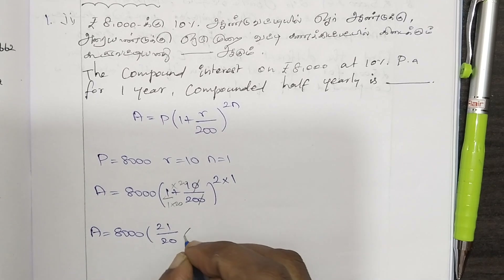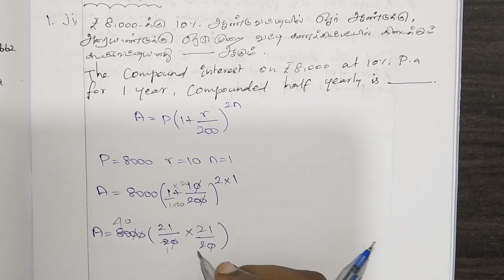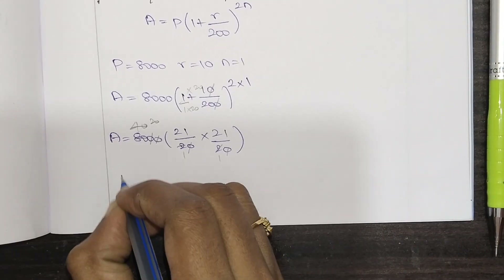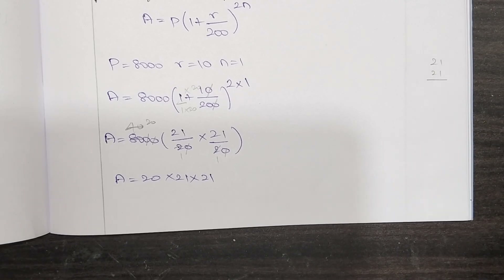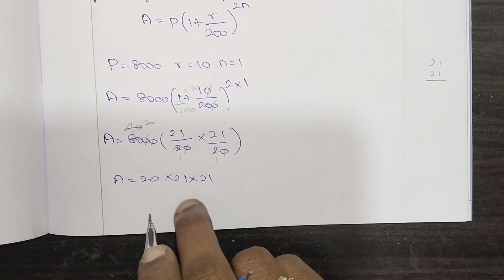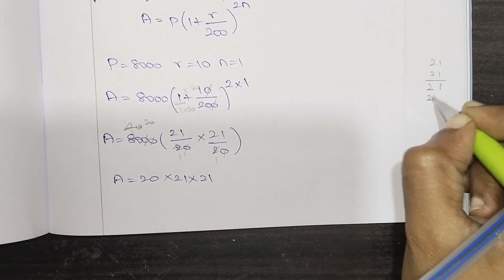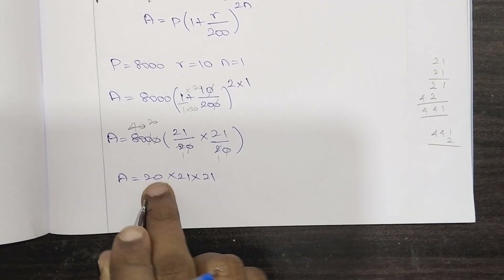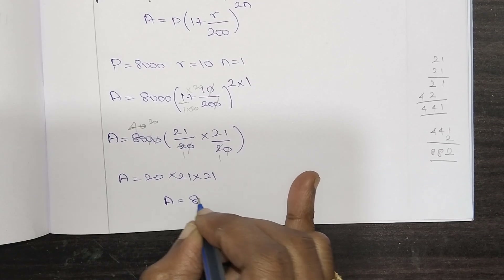We will work through the second step. A equals 8000 into 21 by 20, squared. So we multiply 21 into 21: 1 into 21 is 21, 2 into 21 is 42, giving 441. Then 20 into 20 is 400. So A equals 8000 into 441 by 400.